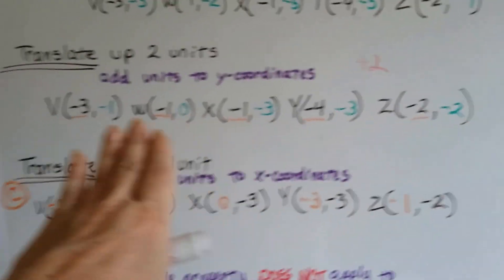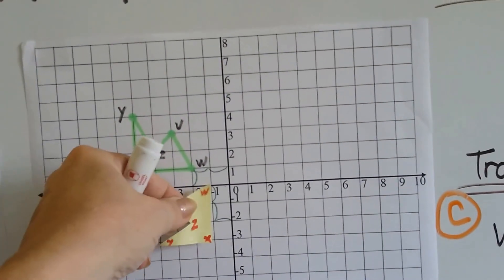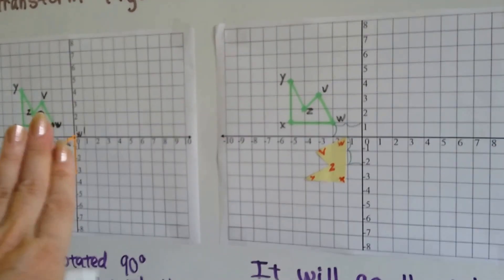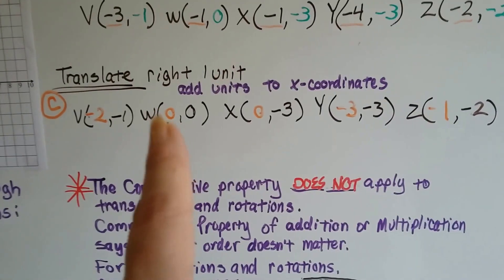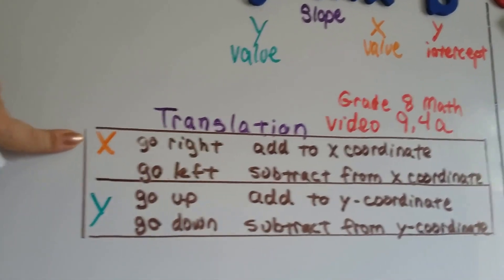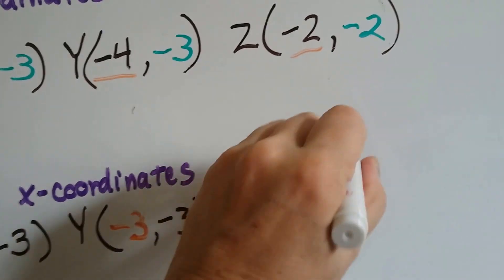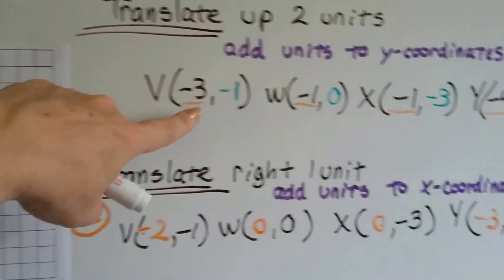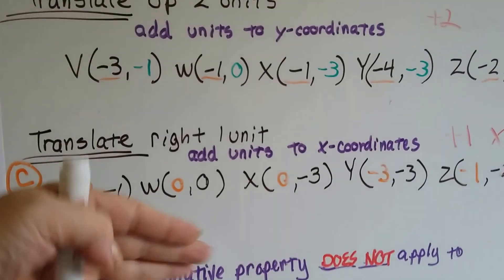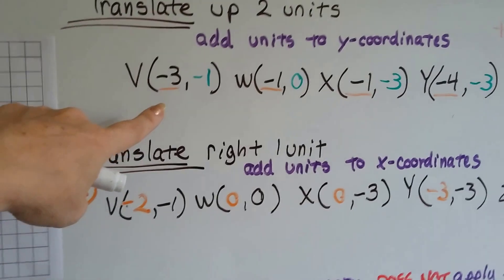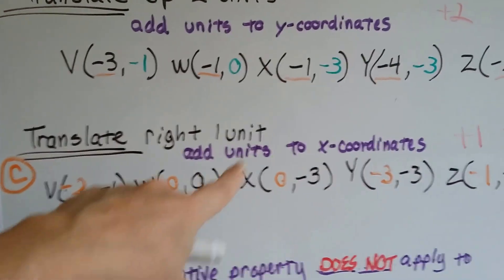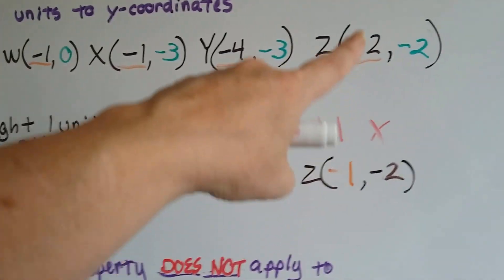Now we have them all translated up two units and our figure is going to be right here. But we still need to move it to the right one space so that it's butted up against the y-axis. To translate right one unit, we add units to the x-coordinates. Because we're going right one unit, we add one to all the x-values — using the image right before it, not the earlier ones. Negative three plus one is negative two. Negative one plus one is zero. Negative one plus one is zero. Negative four plus one is negative three. Negative two plus one is negative one.